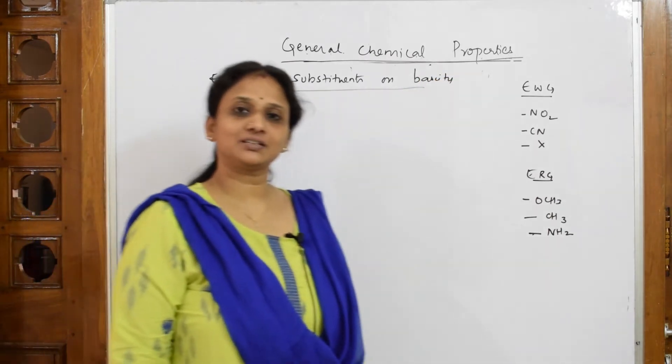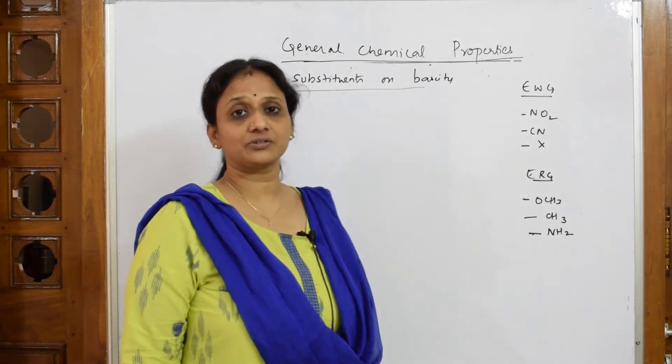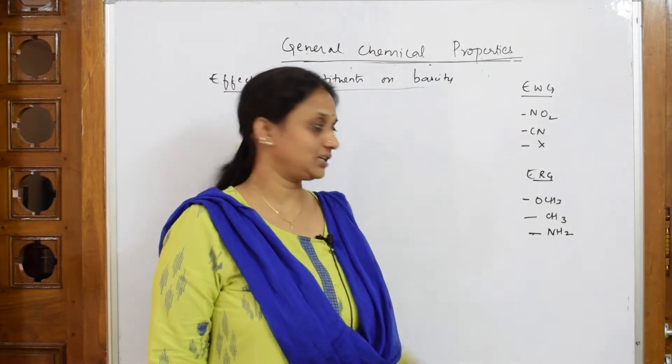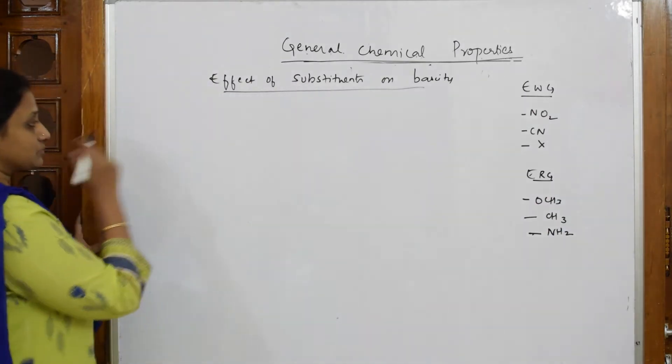This is your grade 11 lesson concept where you have studied what are electron withdrawing groups and electron releasing groups. I have listed out certain examples: electron withdrawing groups and electron releasing groups. I have taken three examples.